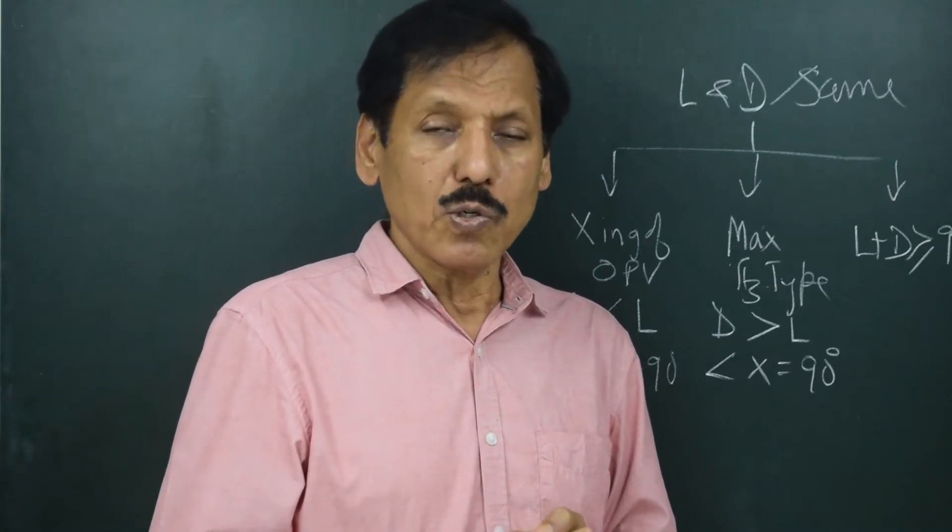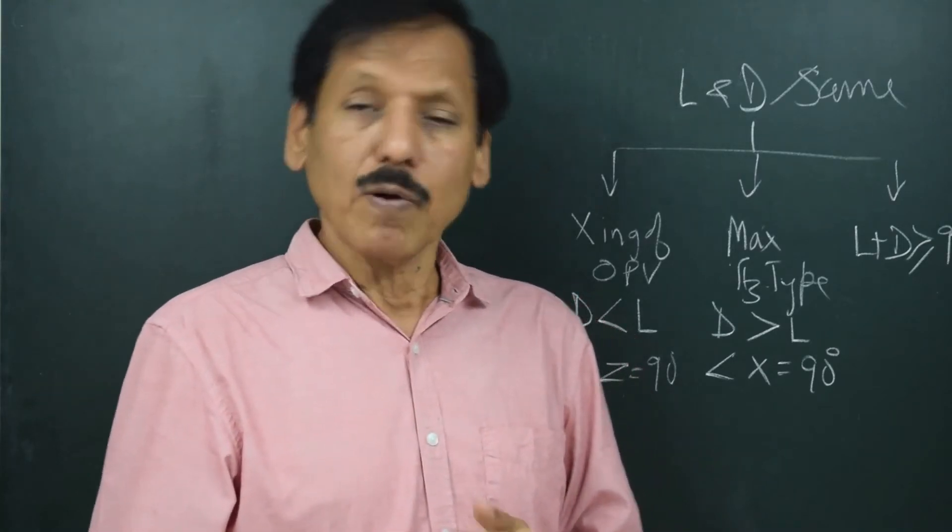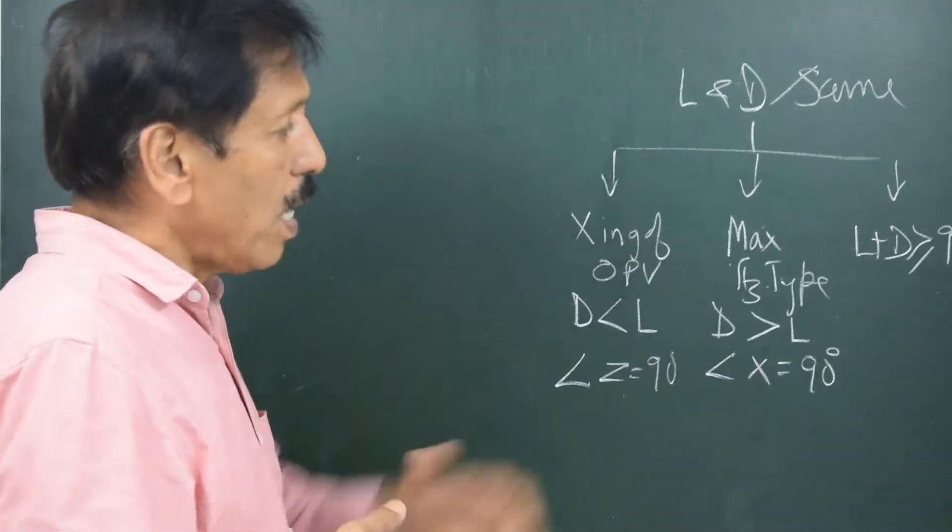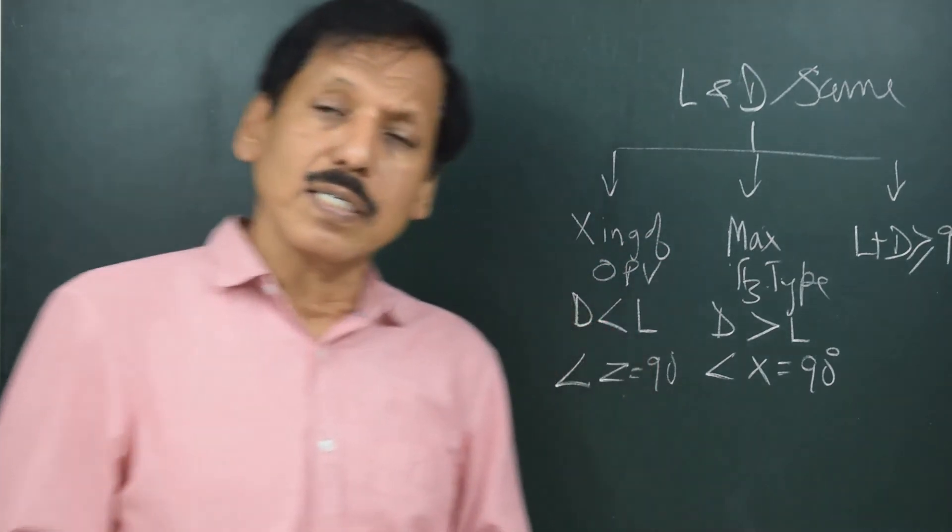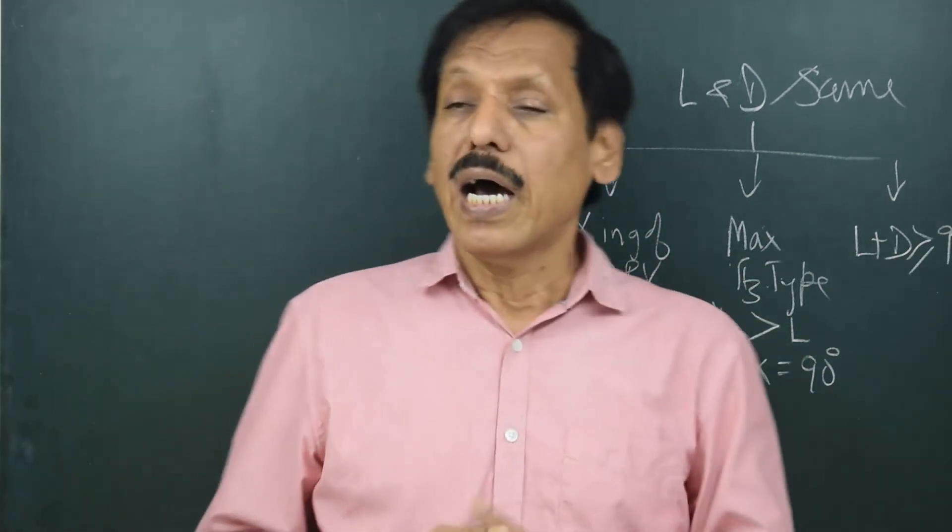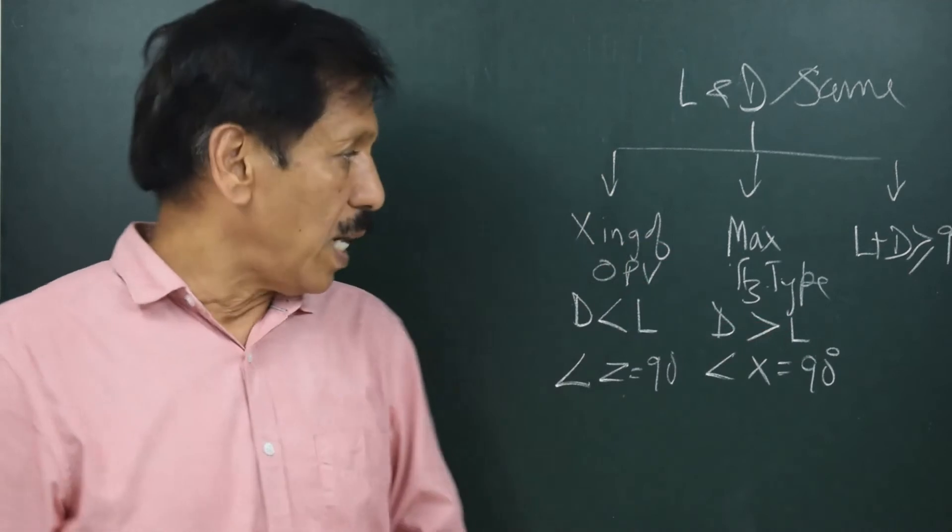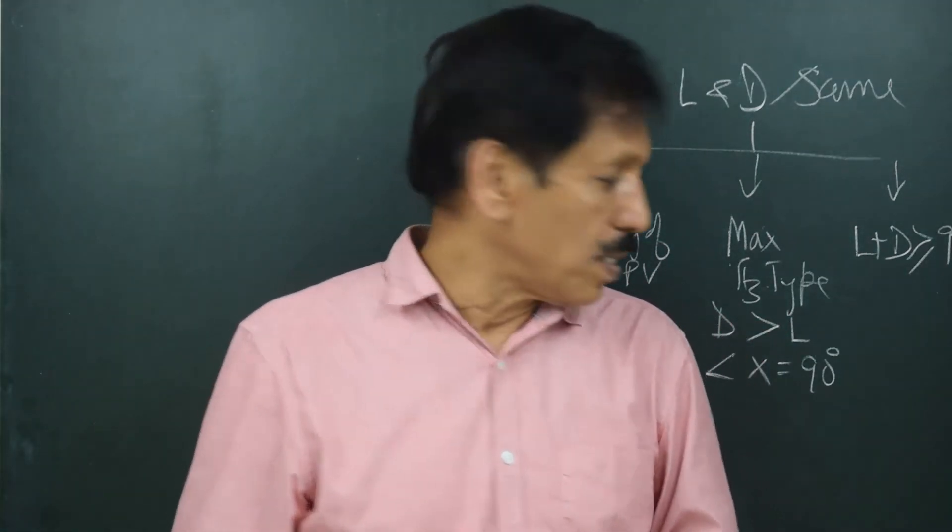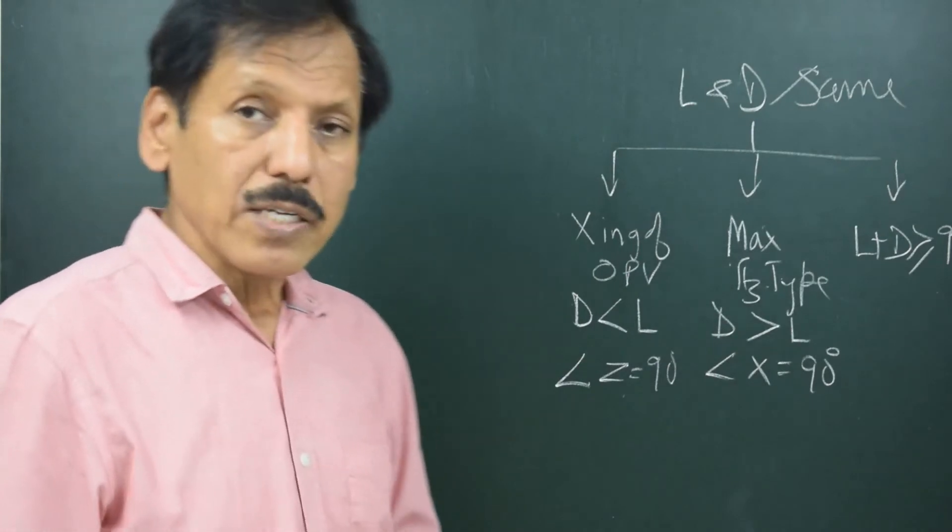So there are a few things to enjoy from the astronomy from the knowledge of astronomy. Coming to this let us try and do this numerical where latitude and declination are same name and declination is more than latitude. Let us understand in this what is this maximum azimuth business and how the angle x becomes 90 degrees.